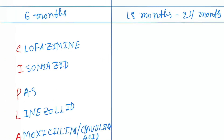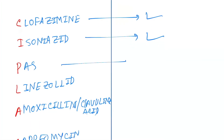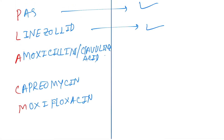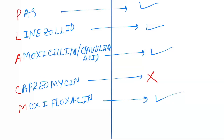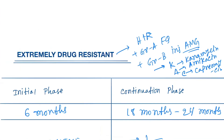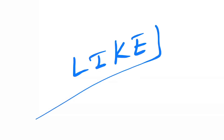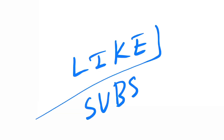In the continuation phase of XDR-TB, clofazimine, isoniazid, PAS, linezolid, and amoxicillin are continued. Moxifloxacin is also continued. Capreomycin is not continued in the continuation phase. These are the treatments for tuberculosis management — please like and subscribe.